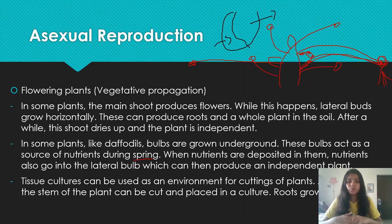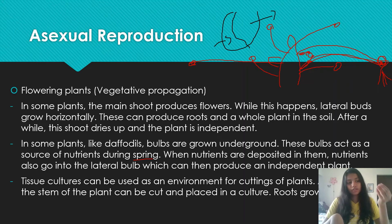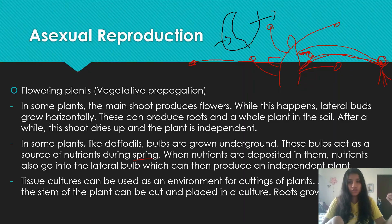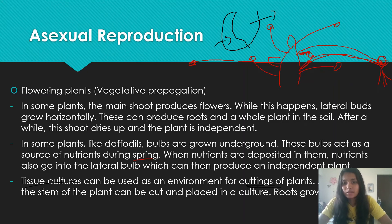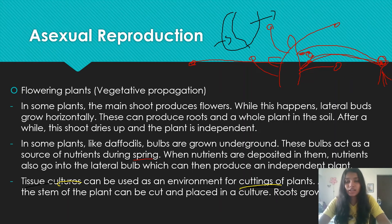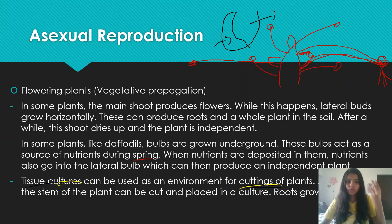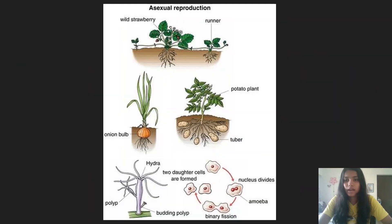A third example is tissue cultures and cuttings. If you have a rose and cut a bit of the stem and place this cut piece of stem into a solution with nutrients and water, soon you will see the stem grows roots from the bottom and a flower will also grow from the top. This is how tissue cultures and cuttings can be used to produce an independent plant. It's actually quite cool — you can produce a proper independent plant from just a stem, and this all happens by asexual reproduction.